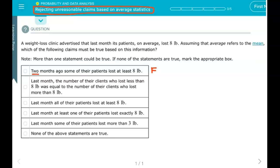The next statement: 'Last month, the number of clients who lost less than 8 pounds was equal to the number that lost more than 8 pounds.' The mean does not tell us that. Now, if we had the median, that would tell us about the same number above and below, but having the mean does not tell us that.